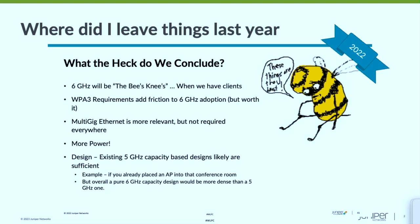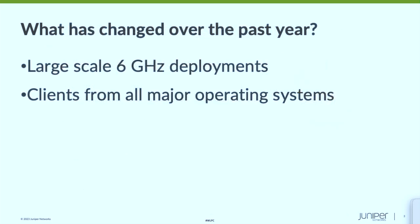Last year I said we think there's going to be some friction with adoption of 6 GHz because of WPA3, and I think that has largely turned out to be the case. But we've had a full year under our belt with large-scale 6 gigahertz deployments and now we've basically completed the client ecosystem where every major operating system has released a client device, so we kind of understand client behavior now, and that plays into design a little bit as well.